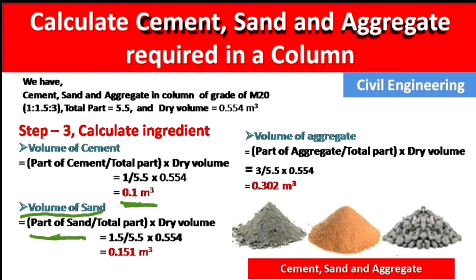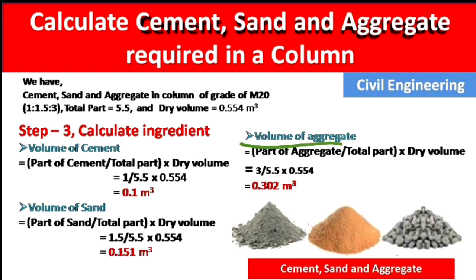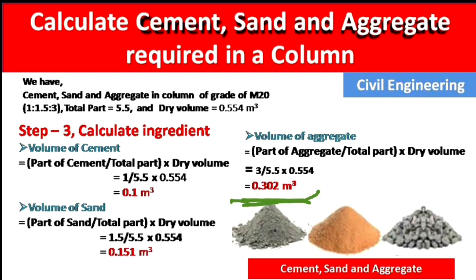Volume of sand = (1.5 / 5.5) × 0.554 = 0.151 m³. This is the formula to calculate the volume of cement, sand, and aggregate. For aggregate: volume of aggregate = (3 / 5.5) × 0.554 = 0.302 m³. So we have calculated the volumes of all three ingredients.